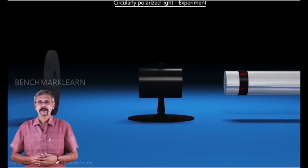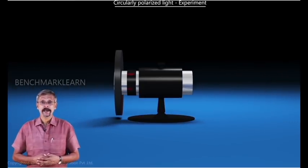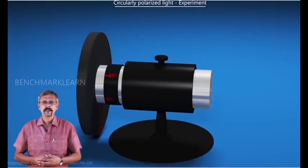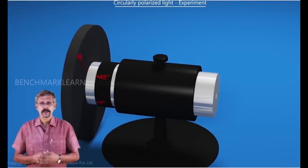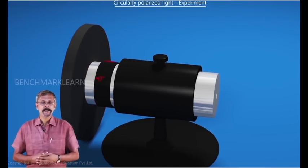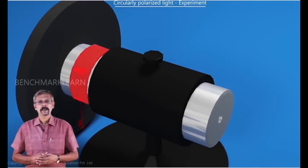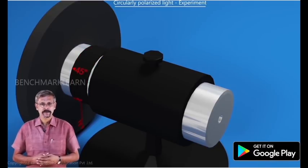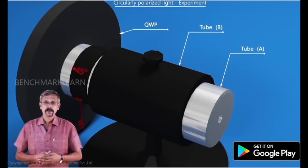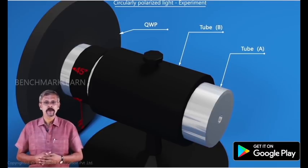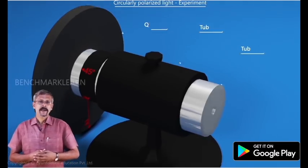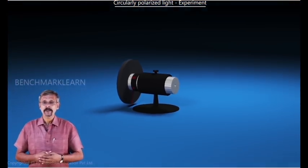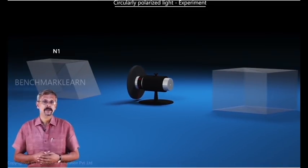The hardware plate is mounted on a tube A in such a way that both can be separately rotated. The tube carries a circular scale which is graduated in degrees. The tube A rotates within another tube B. The arrangement is kept in between two crossed nickels N1 and N2.